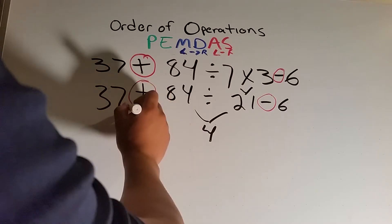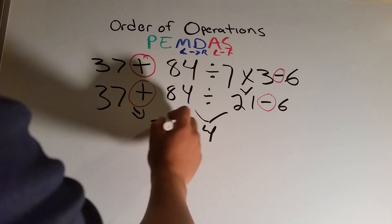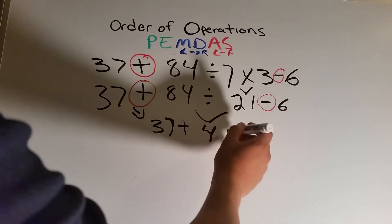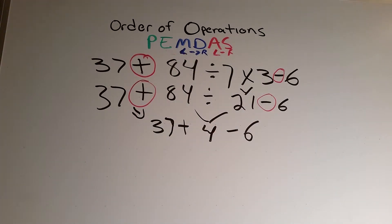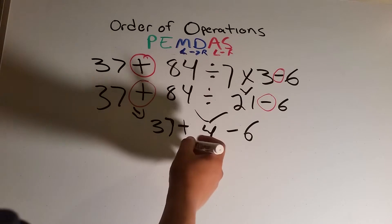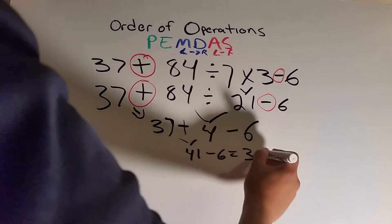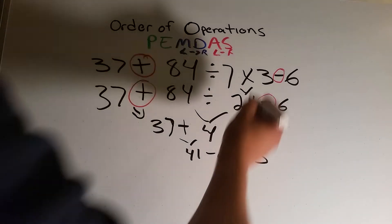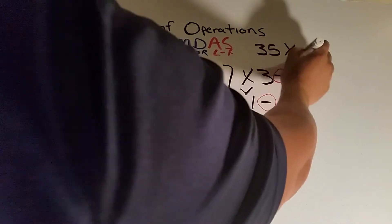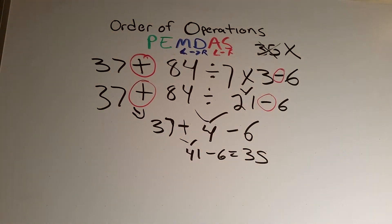So now we have 37 plus 4, because we already took care of everything else, minus 6. All we have left is addition and subtraction. So 37 plus 4 gives us 41, minus 6, which gives us 35. That's our wrong answer — because we did the top process wrong — and it comes out to 35. I want you to remember it, but that is not the correct answer.